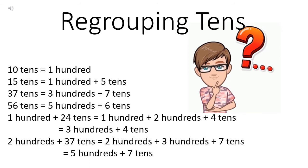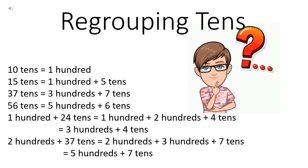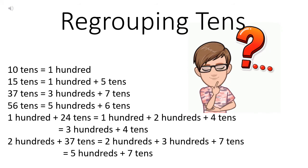Now if you have thirty-seven tens, we will regroup again. Thirty tens become three hundreds, and we have seven tens more. So thirty-seven tens is equal to three hundreds plus seven tens. Now if you have fifty-six tens, we will regroup it as five hundreds plus six tens. Now suppose you have one hundred plus twenty-four tens — one hundred will be written as it is and we will regroup twenty-four tens into two hundreds and four tens. That means one hundred and two hundreds become three hundreds and we have four tens more — three hundreds plus four tens.